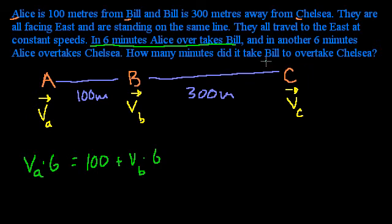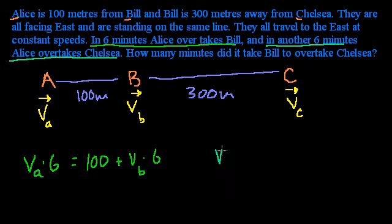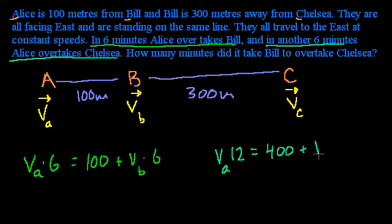The next thing this problem tells us: in another six minutes, Alice overtakes Chelsea. So from the beginning it essentially takes 12 minutes — six to overtake Bill and then another six to overtake Chelsea. So in 12 minutes, Alice has to overtake Chelsea. That means she traveled 400 more meters than Chelsea. So Alice's velocity times 12 equals Chelsea's velocity times 12 plus 400.